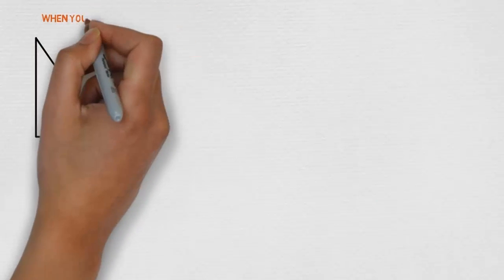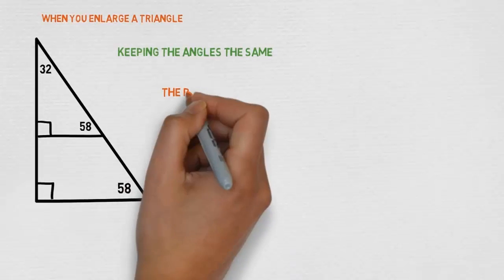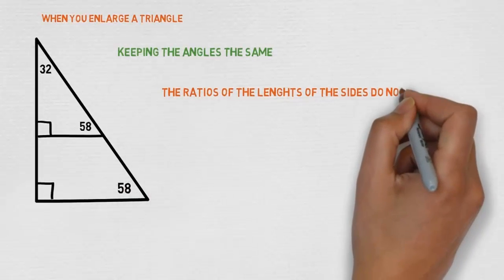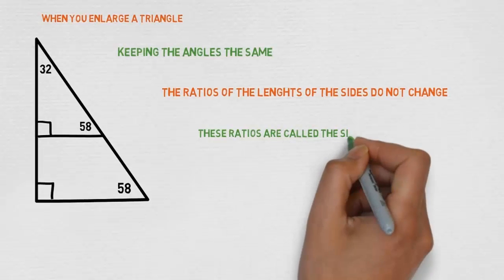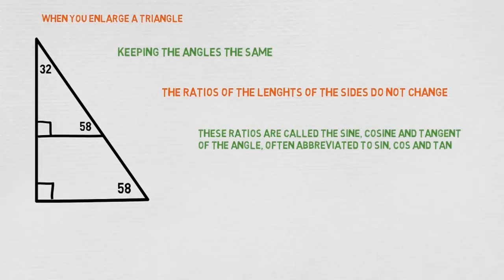When you enlarge a triangle, keeping the angles the same, the ratios of the lengths of the sides do not change. These ratios are called the sine, cosine, and tangent of the angle, often abbreviated to sin, cos, and tan.